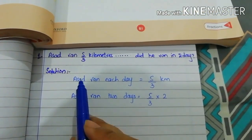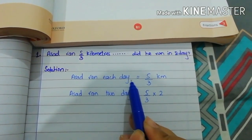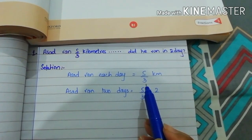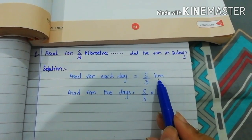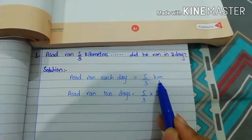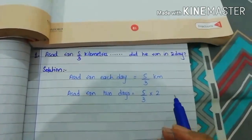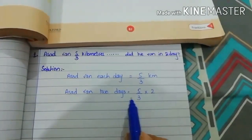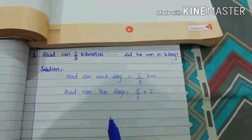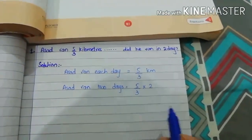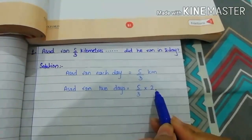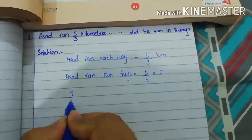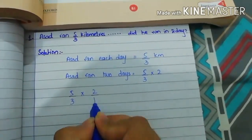Asad runs each day = 5/3 kilometers. You can also write 'km' instead of kilometers — km is the short form of kilometers. Now Asad ran for 2 days, so we will multiply this fraction by the number of days. So 5/3 multiplied by 2, which is 5/3 multiplied by 2/1.